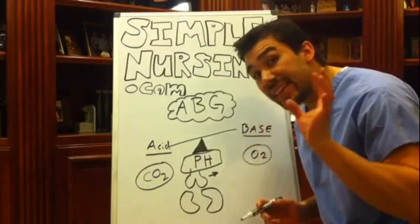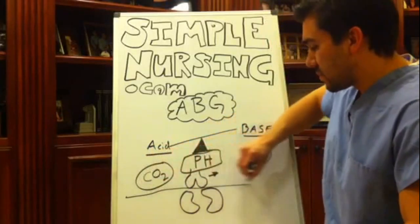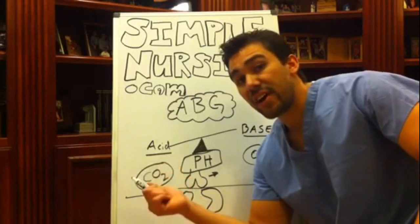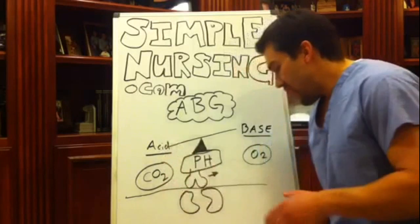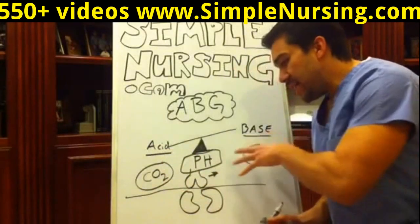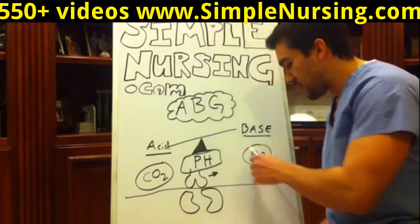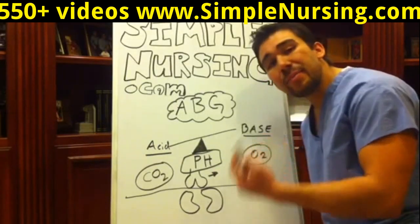Easy ways to remember this: for your respiratory tract, if you have too much carbon dioxide — I like to call it carbon diacid — you'll be in an acidotic state. If you have too little carbon dioxide and you have an increase in oxygen, you'll be in a basic state.